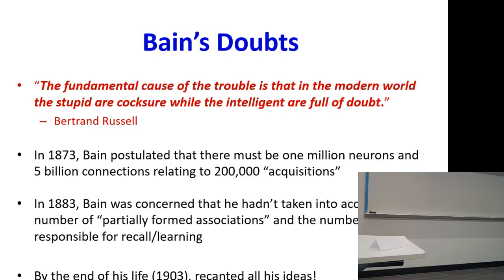This was true of Bain as well. He went through the math and postulated that there must be one million neurons and five billion connections in order to obtain 200,000 acquisitions in the brain. Then he said 200,000 acquisitions is not going to explain everything that we do — the number of different inferences is much larger. He worked out the arithmetic, and by 1903 he said 'no, I was wrong,' apologized to the world, and died.